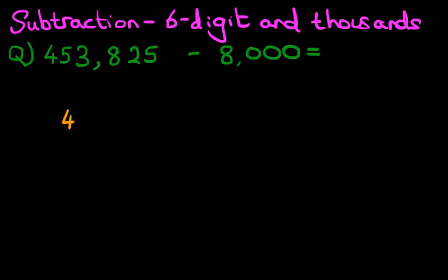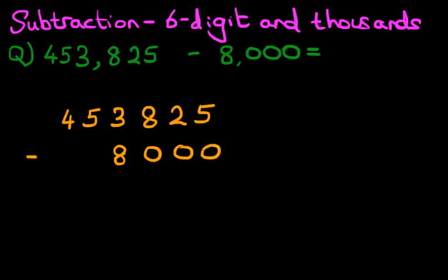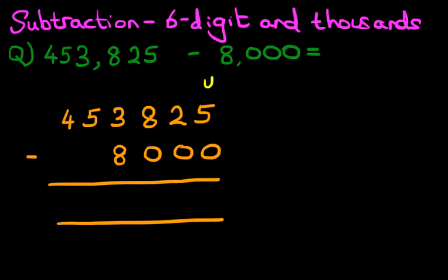We've got 453,825 minus 8,000. And let's label the columns as well. We've got the units column, tens, hundreds, thousands, ten thousands, and hundred thousands.